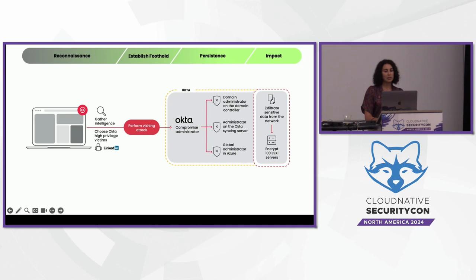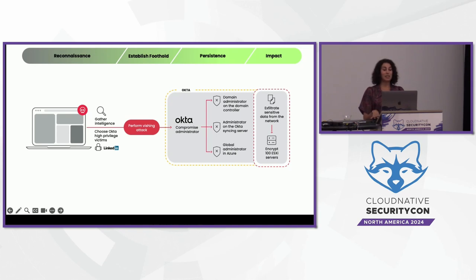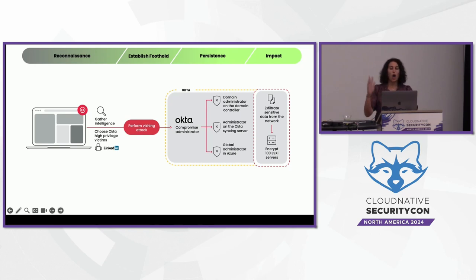They deployed ransomware on many servers by calling in a different attacker group, BlackCat, to encrypt several hundred ESXi servers that hosted thousands of VMs supporting critical systems at MGM. The result was cascading chaos that impacted MGM's operations and services — hotel room keys, dinner reservation systems, sale systems, and slot machines all went down. The full extent of damage is estimated to have been over $8 million a day.